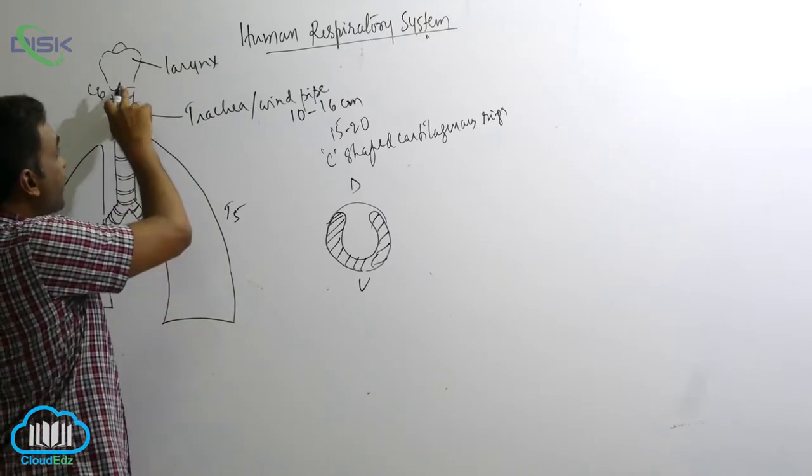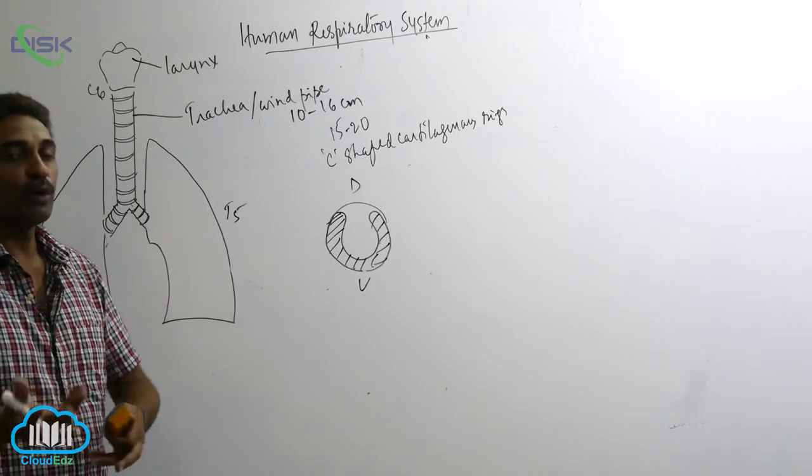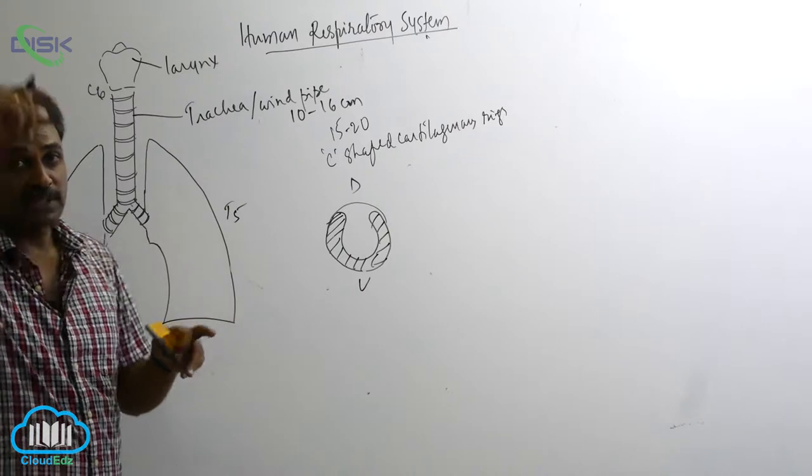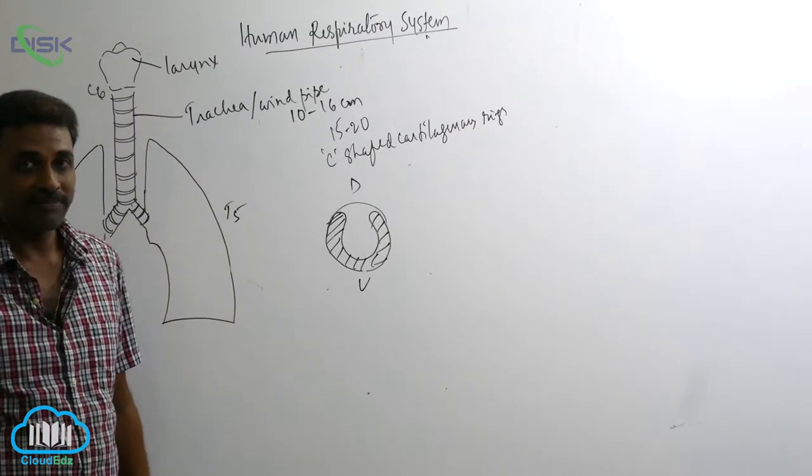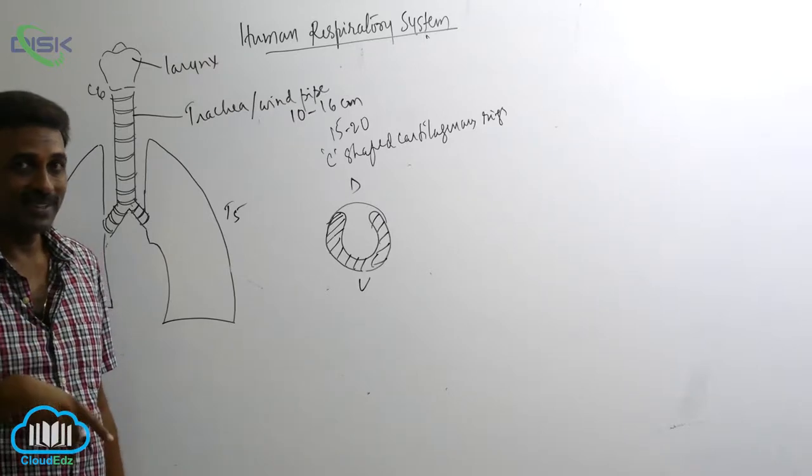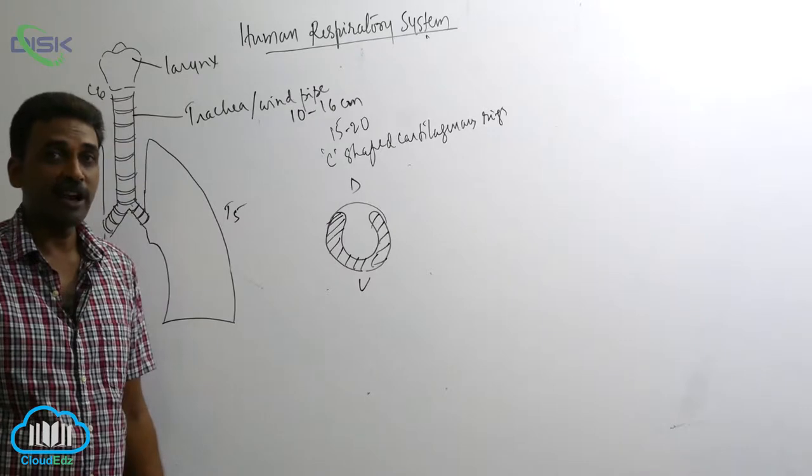The first ring is the cricoid. Cricoid is the lowermost part of the larynx and that itself becomes the uppermost part of trachea, the first ring of trachea which is complete. The next remaining rings are all incomplete and made up of hyaline cartilage.